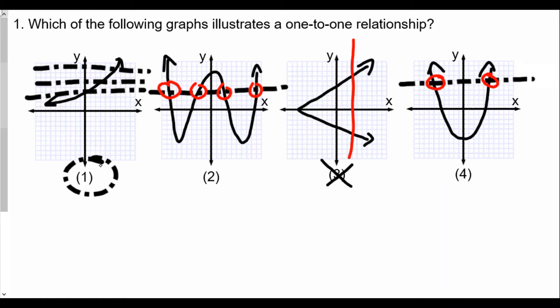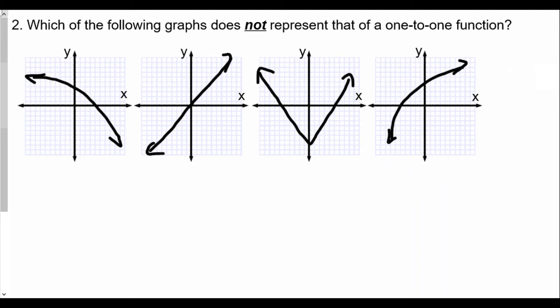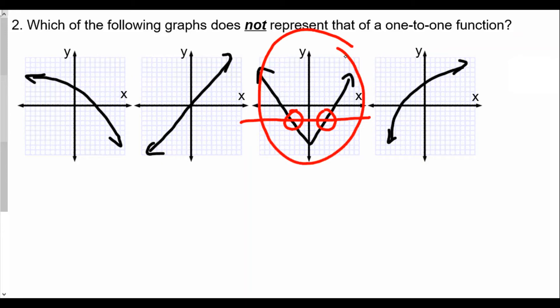We'll see this again used for question two: which one does not represent a one-to-one function? Which one does not pass the vertical and horizontal line test? If we draw a horizontal line, we're seeing more than two points of intersection — it is going to be this one. The graphs were labeled: number one, number two, number three, and number four. Number three is the answer — it does not represent a one-to-one function.